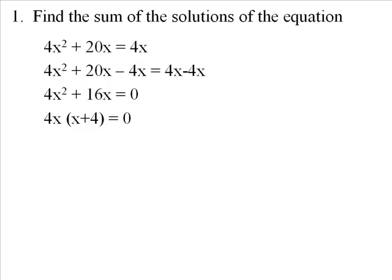Now we'll split the equation into two equations where you have 4x = 0, or x + 4 = 0. On the left side, 4x = 0, so x has to equal 0 when we divide by 4. On the right side, when I subtract 4, I'll get x = -4.